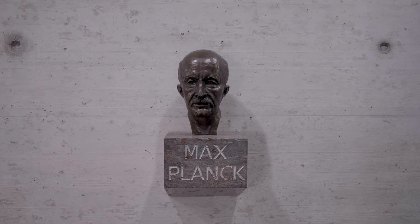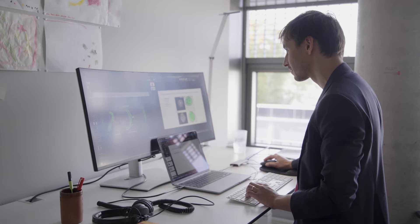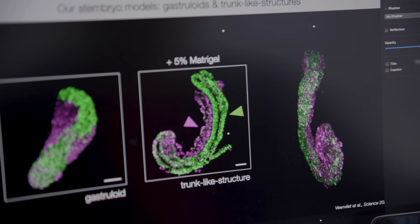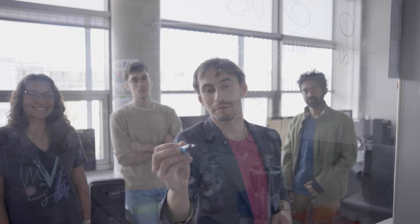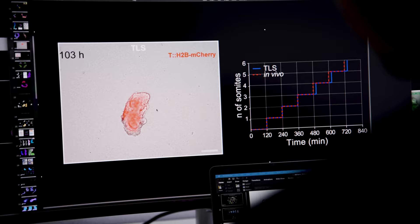Most of mammalian, so mouse and human development, occurs inside the womb, and we are severely limited in understanding how the mammalian embryo shapes itself. To overcome these limitations, we and others developed methods to coax pluripotent stem cells to form embryo-like structures or embryonic organoids.